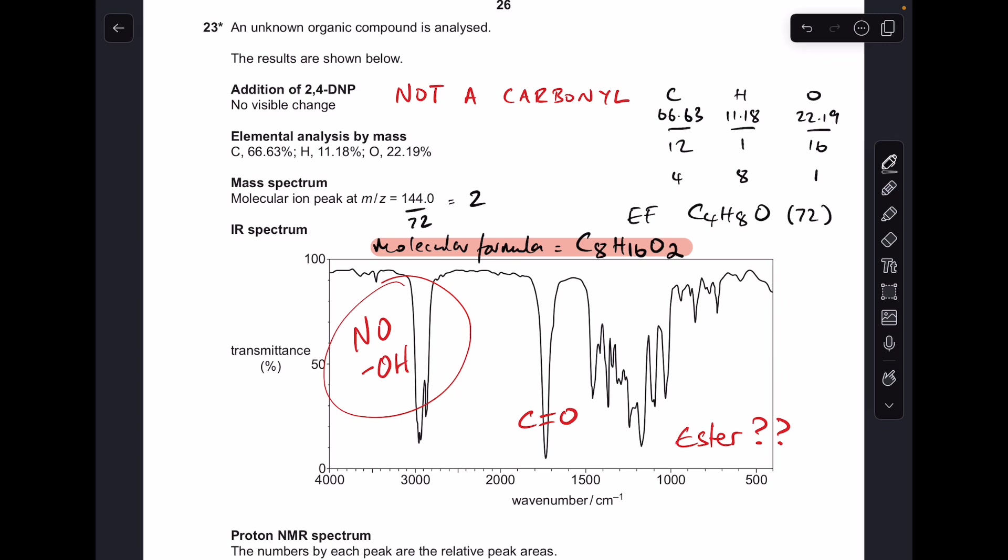If we quickly look at the infrared spectrum, you can see I've written up that there's no OH. We haven't got that characteristic OH absorption for alcohol, phenol, or carboxylic acid, but we have got a C=O. So I'm now thinking, because there's two oxygens in the molecule, it's an ester.